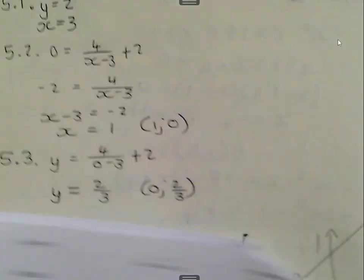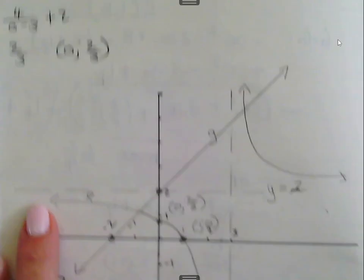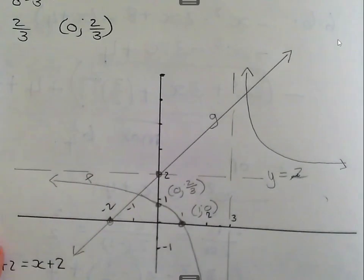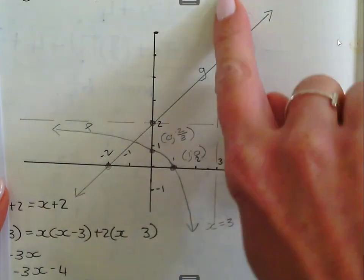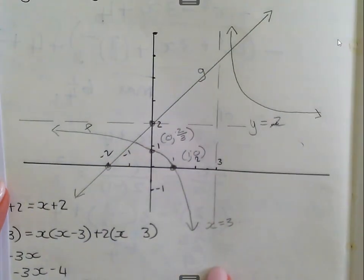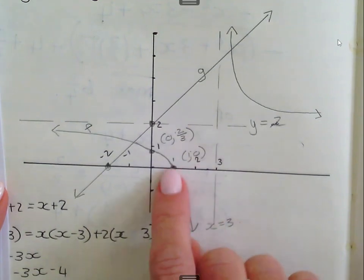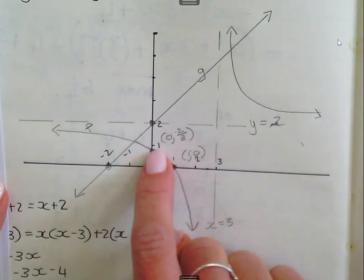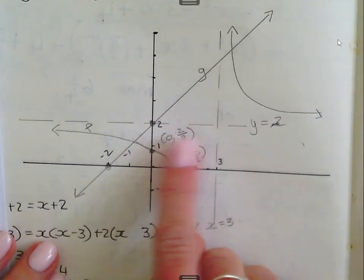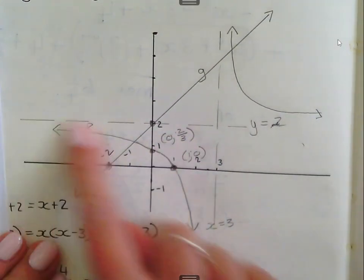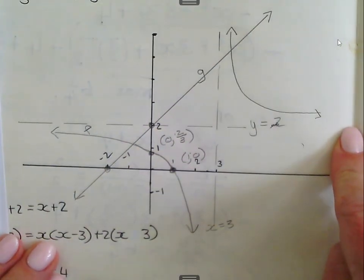Then you had to draw the graphs. So I started with the hyperbola, I put in the asymptote y equal to 2, then the asymptote x equal to 3. I plotted my intercepts at 1 and 0 and 0 and 2 over 3. Remember to put in the names.